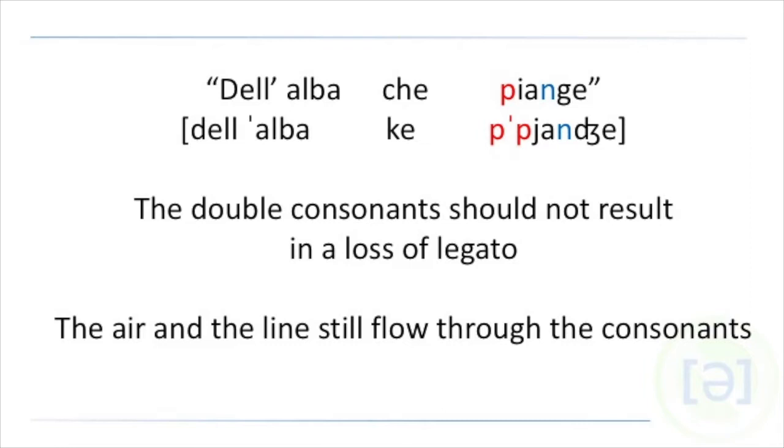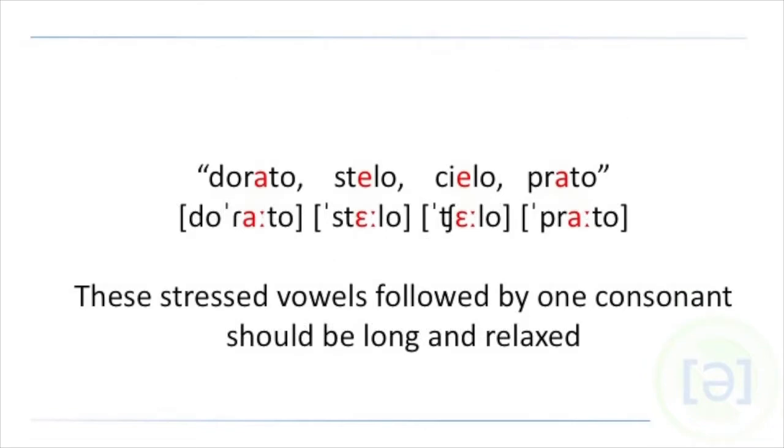And I find it interesting with this second verse that we have this playoff of the doubles and then long syllables that have only one consonant after it, like dorato. There we actually need these long syllables. We need the long vowels. All of the ones at the end, they're all long. Cielo, prato. So not to accidentally double those just because we've doubled everything else in the whole piece.